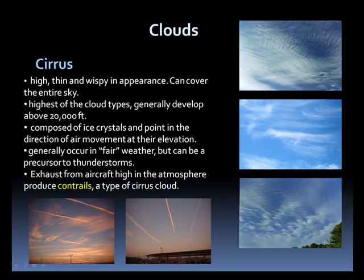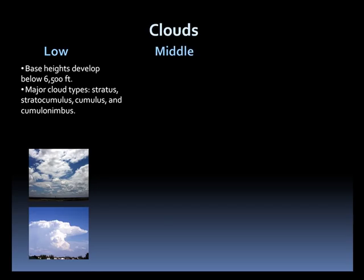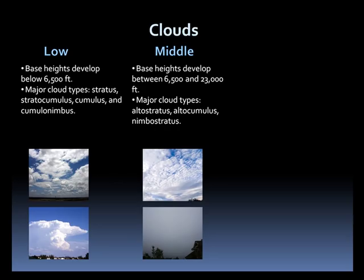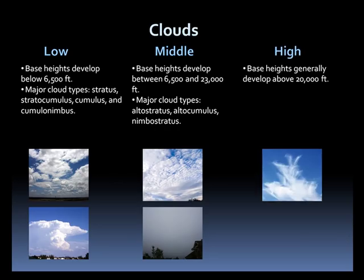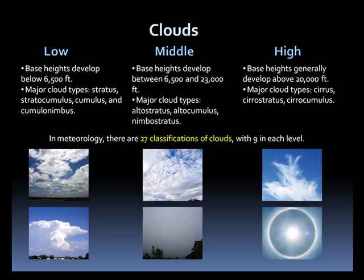While cumulus, stratus, and cirrus are the three main cloud types, there are many variations, and clouds are further classified into three different levels: low, middle, and high. Low clouds have bases below 6,500 feet; the major types include stratus, stratocumulus, cumulus, and cumulonimbus. Middle clouds develop their bases between 6,500 and 23,000 feet; major types include altostratus, altocumulus, and nimbostratus. High clouds generally form above 20,000 feet; major types are cirrus, cirrostratus, and cirrocumulus. In meteorology, there are 27 classifications of clouds, with 9 types in each level. Overall, the number of different cloud types exceeds 80.